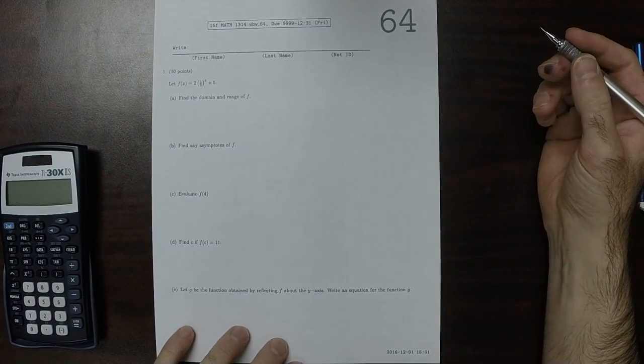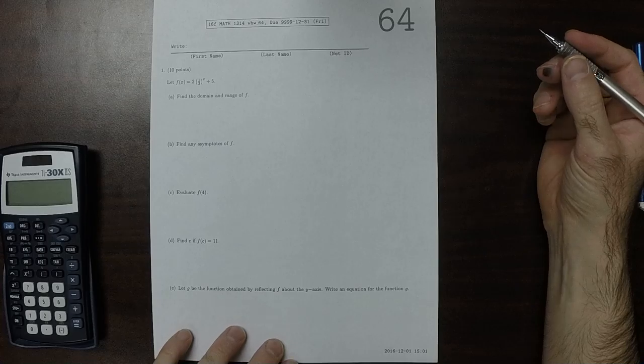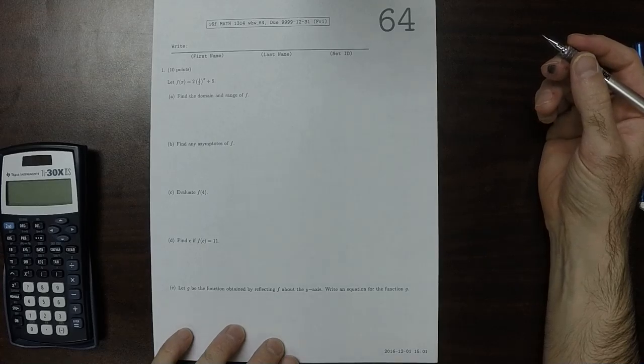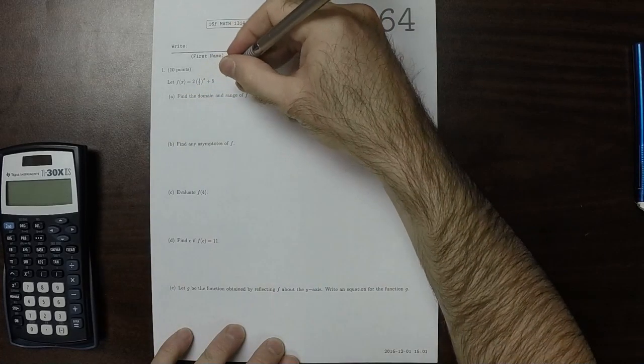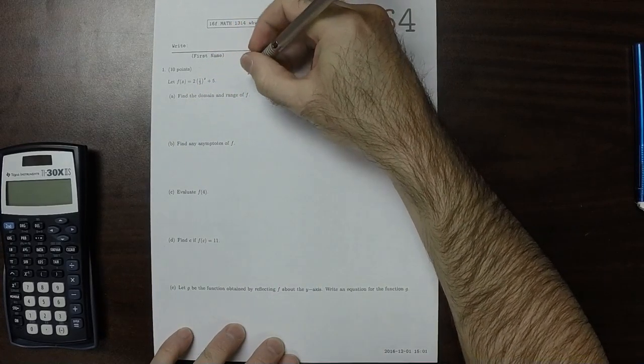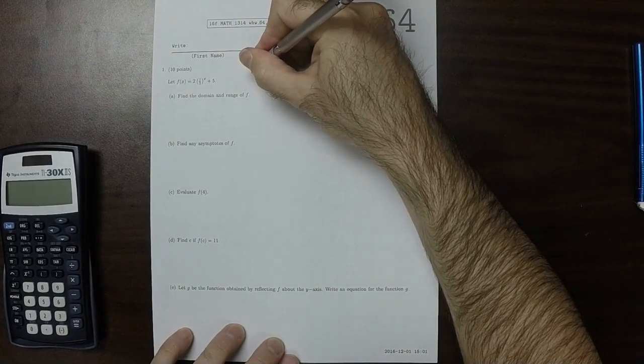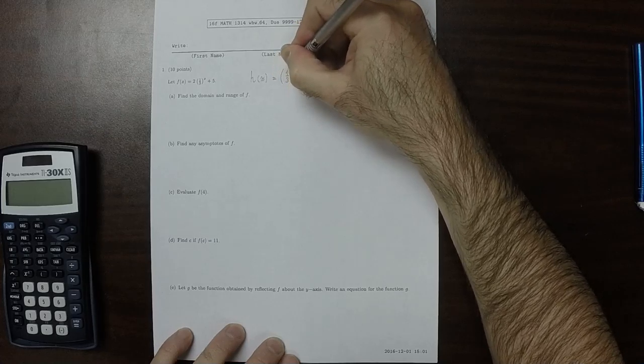This is the solution to written homework 64. Let's consider the related function h(x) which is just (1/3)^x.